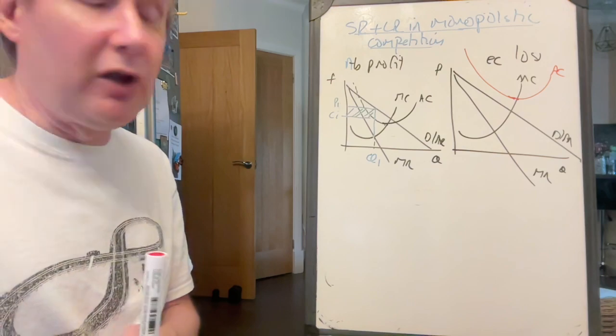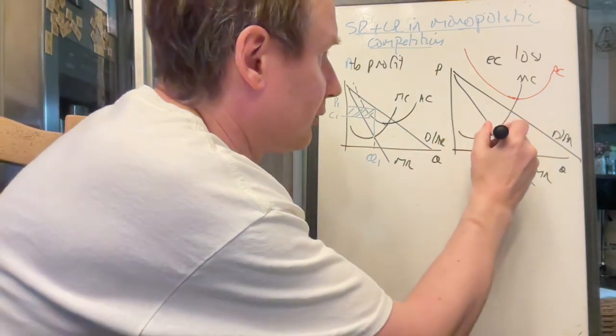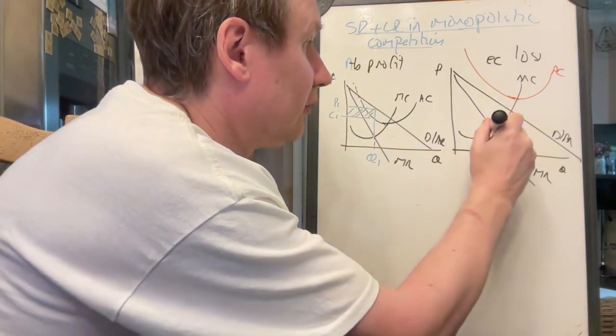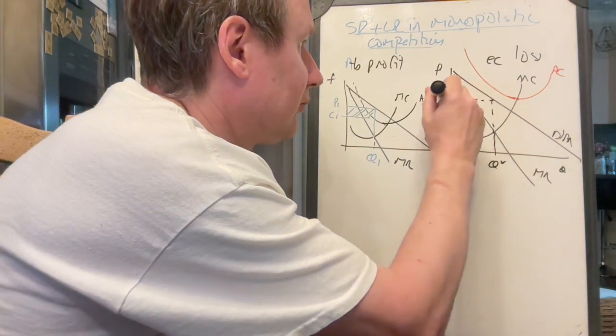So again, we find the profit maximizing output, that's the marginal step. We find Q star, where MC equals MR, we go up to the price here, P1.